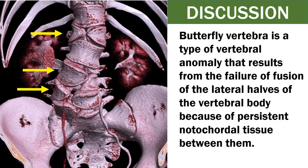Butterfly vertebra is a type of vertebral anomaly that results from the failure of fusion of the lateral halves of the vertebral body because of persistent notochordal tissue between them.